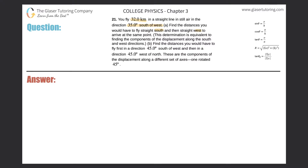Let's first draw a set of axes — a y-axis and an x-axis — and draw in the vector. They're saying that the direction in which we're traveling is 35 degrees south of west. Here's west, here's south, and we're going to be 35 degrees south of west — a little less than 45 degrees.